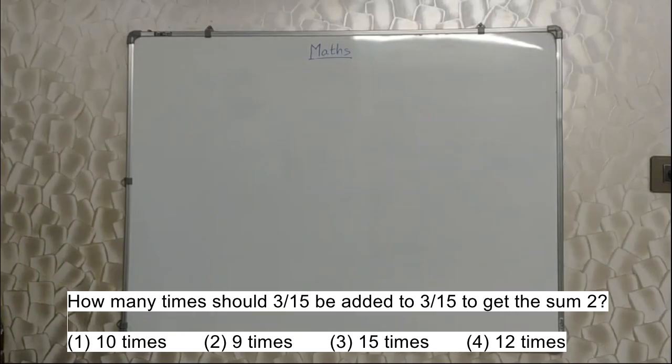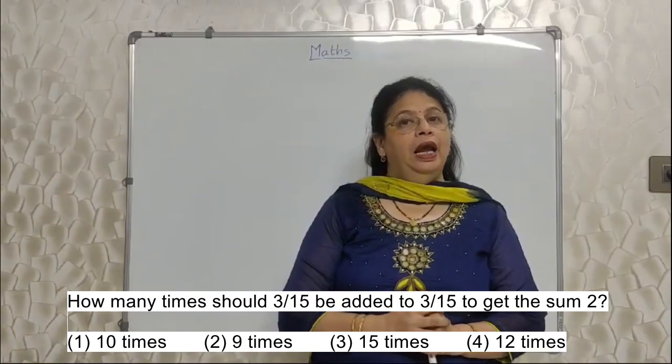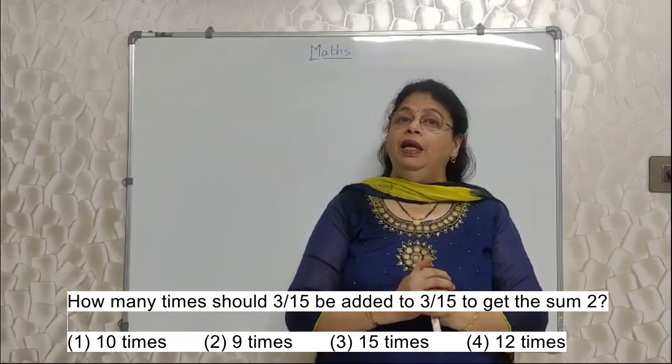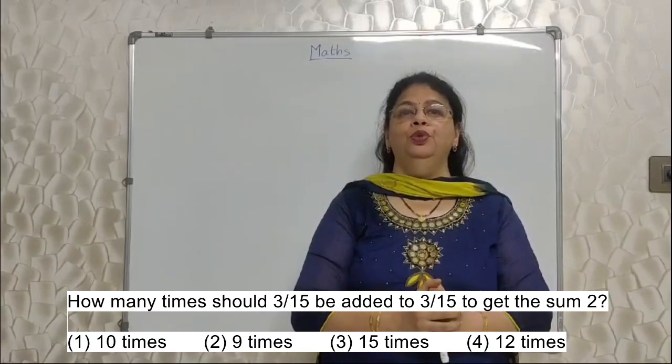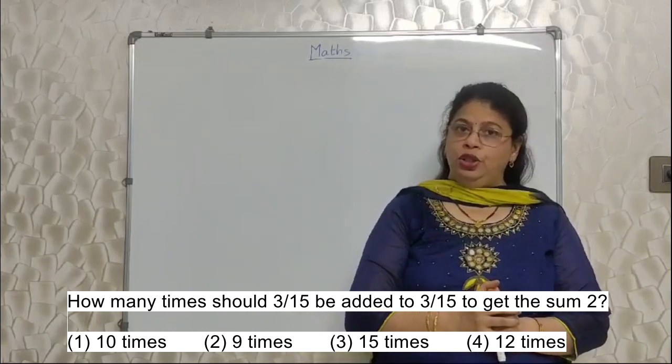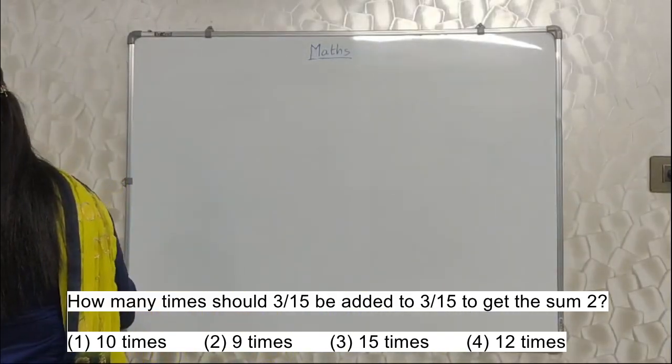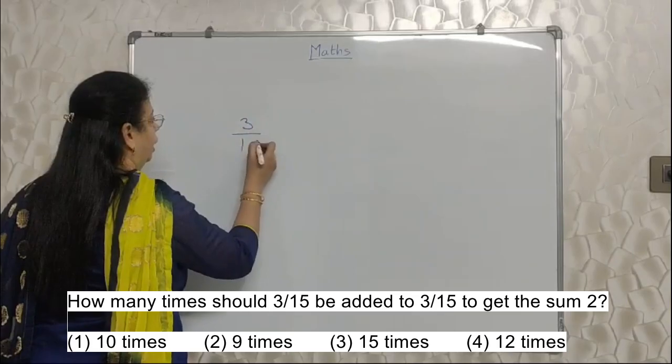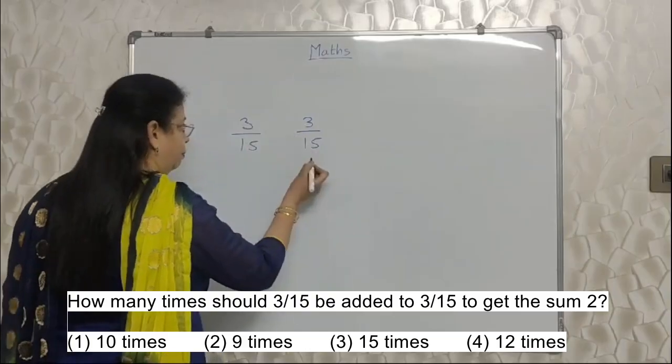How many times should 3 upon 15 be added to 3 upon 15 to get sum 2? This sum can be solved taking help of fractions. Yes, I agree, it should be done that way. But in competitive exams, sometimes to save time, we have to use shortcut methods. So today I am going to share with you a shortcut method for this particular sum. What they are saying is, 3 upon 15 is already there. To that, they want to add 3 upon 15 how many times to get 2.